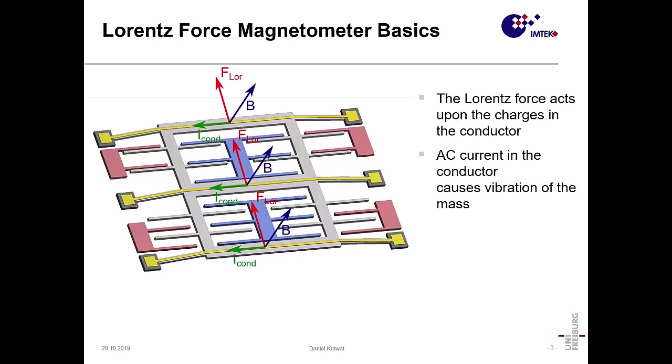If we now use an AC current, the structure will start to vibrate. If the current frequency is equal to the resonance frequency of this mechanical resonator, we will get the biggest deflection for a given magnetic field.